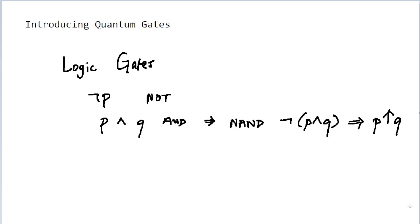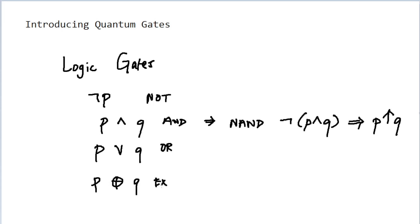Going on from there, there is also the idea of what happens if we only need one of our particular statements to evaluate to true — or one or both — for the overall statement to be true. That is our OR operator. And then, of course, if you only want one or the other, either P or Q but not both, to evaluate to true for the overall statement to be true, we have the exclusive OR, or XOR.